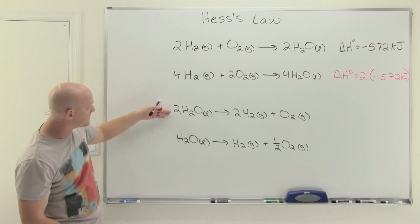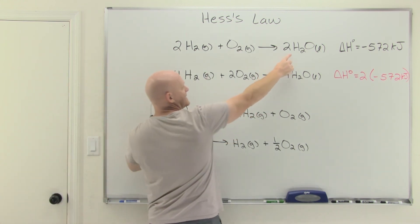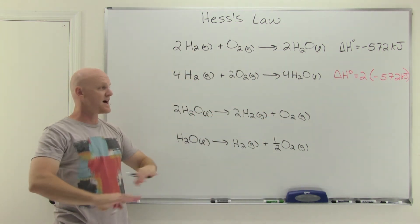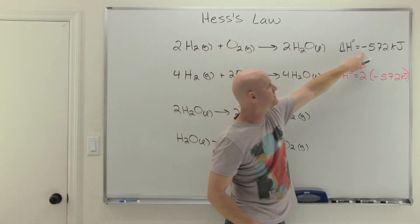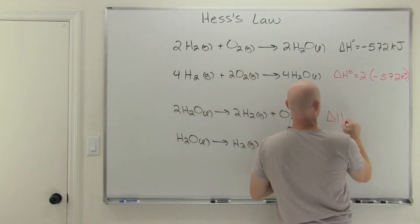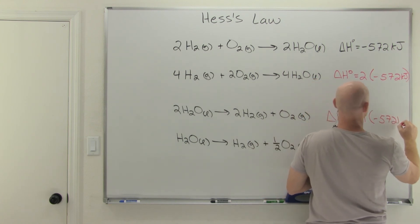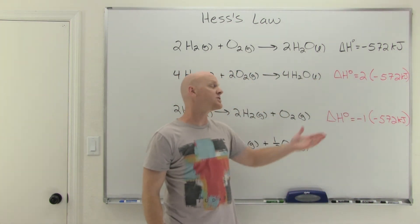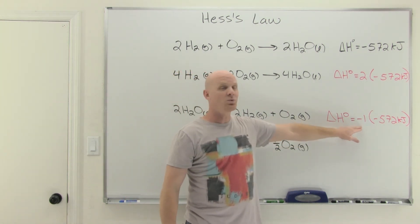The third reaction is exactly reversed from the original — water is now the reactant instead of the product, and H₂ and O₂ are the products instead of reactants. The coefficients are exactly the same, but when you reverse a reaction, rather than being exothermic it becomes endothermic, so you change the sign. Delta H equals negative one times negative 572 kilojoules, or simply positive 572 kilojoules.